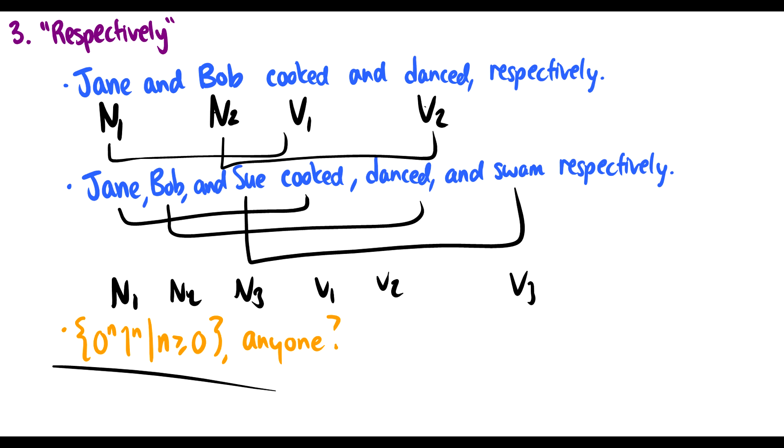If we do want to model language with finite state machines and allow this 0 to the N, 1 to the N to be an exception, we still can't capture the difference in structure. But our brains can. Our mind does. With this word respectively, we have to go back in the sentence and say those nouns and verbs we heard, the order in which they're linked to each other is different. That's why human language can't be regular. Three examples.